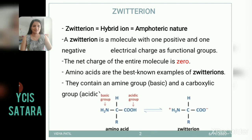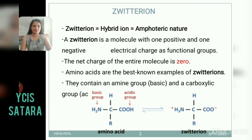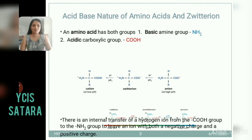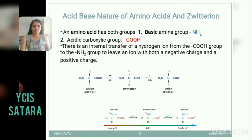I will emphasize on the zwitter ion structure: positive charge and negative charge, both charges are present on the molecule. Because of this property, amino acid shows acidic properties as well as basic properties, so they are amphoteric in nature.